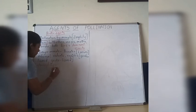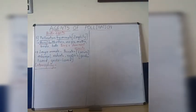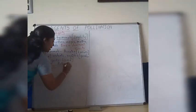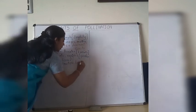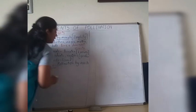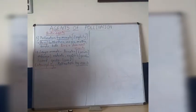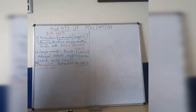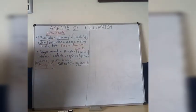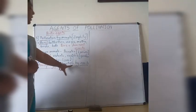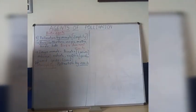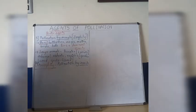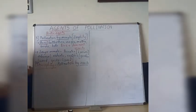Moving on to entomophily — we need to understand its definition. Entomophily means the pollination carried out with the help of insects only. Hence we call it entomophily. Please mark this as important. In order to undergo pollination by insects, flowers have certain adaptations. Let us look at them one by one.